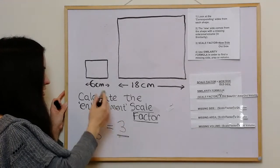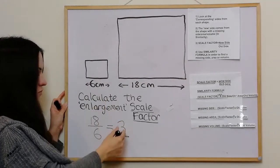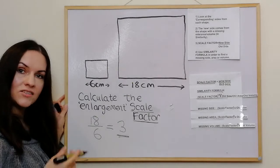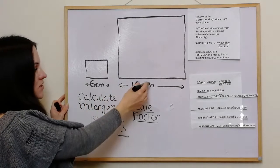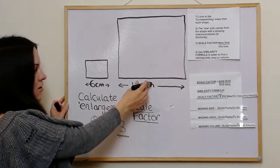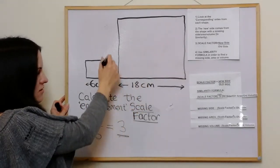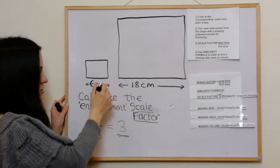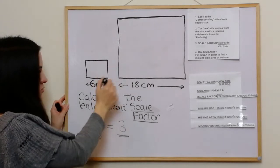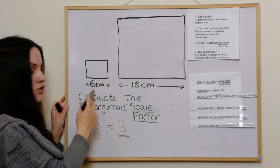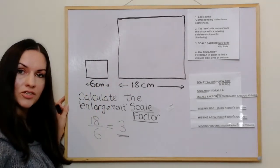So essentially it's been enlarged by a factor of 3. Everything is going to be three times as large — any of the dimensions on these sides will be three times the dimensions on the other shape.